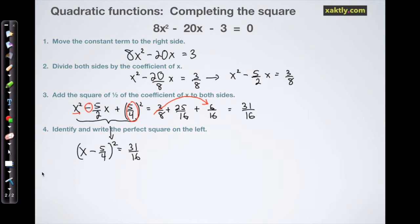And now we can just take the square root of both sides, so that frees up our x - 5/4 on the left from that square, and we'll have the square root of 31 on the numerator plus or minus, and then a 4 in the denominator. And the 4 is just an easy square root that I can take.